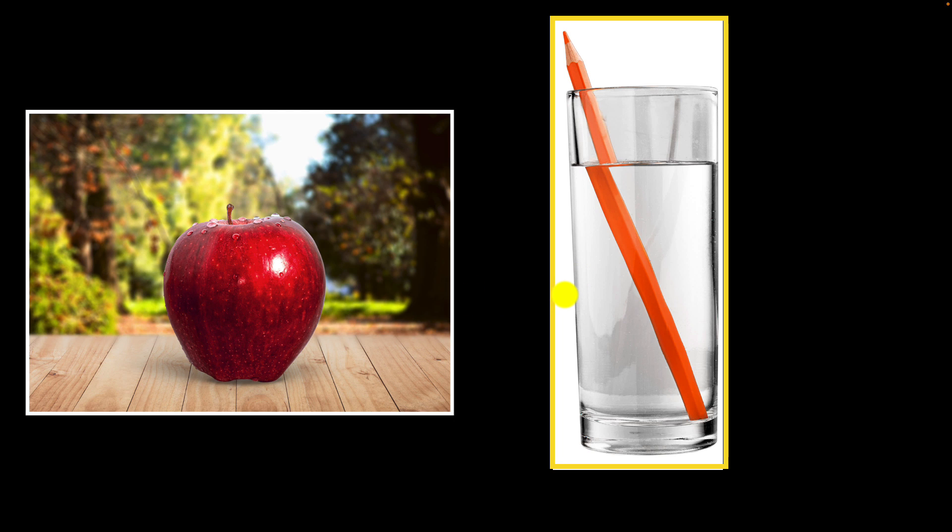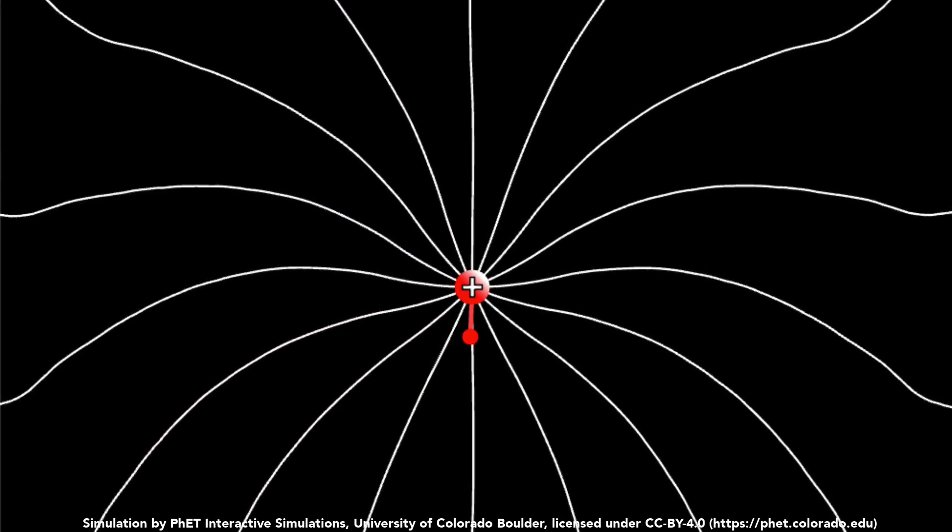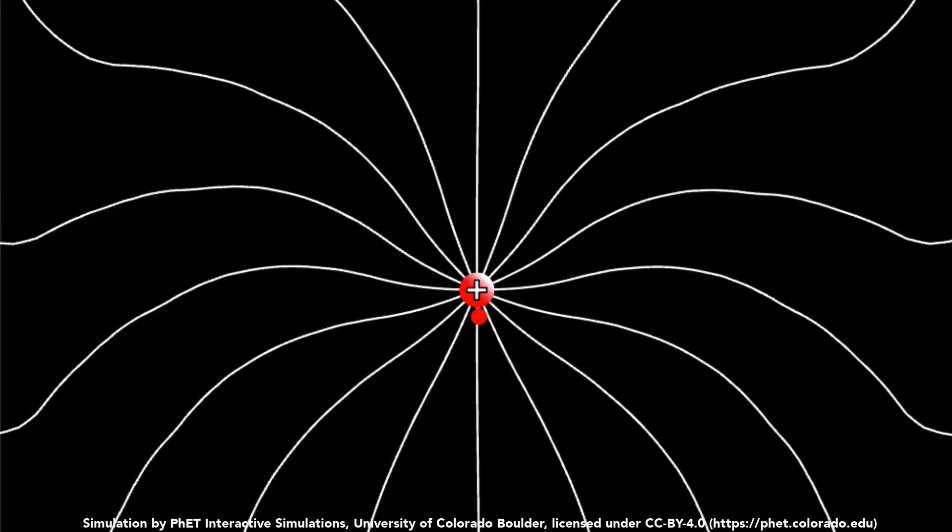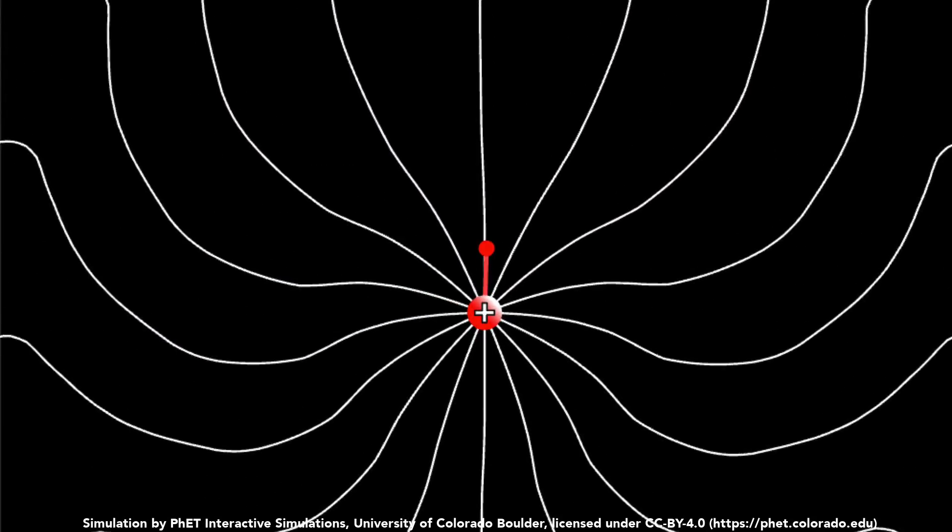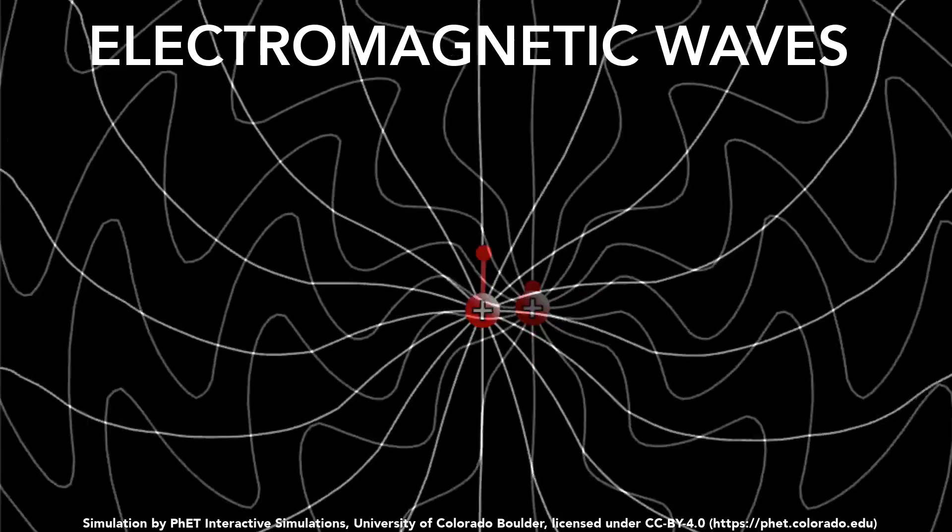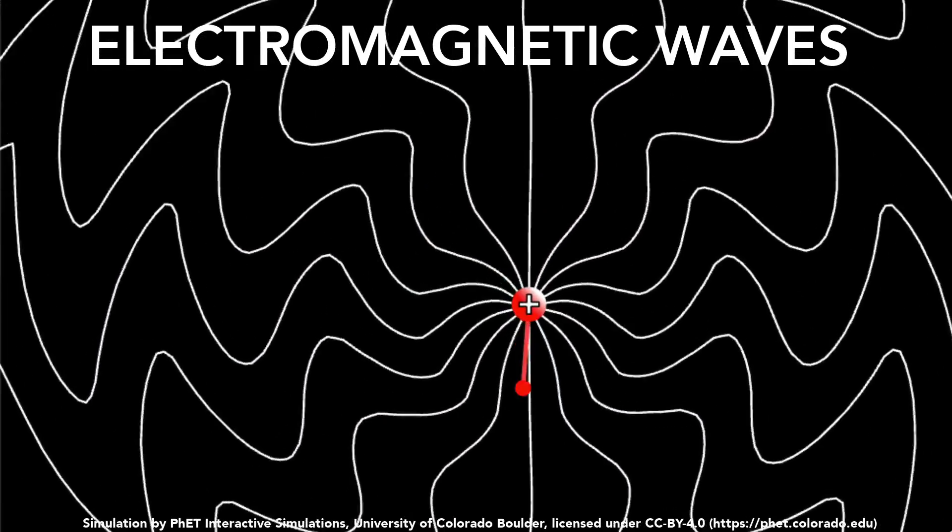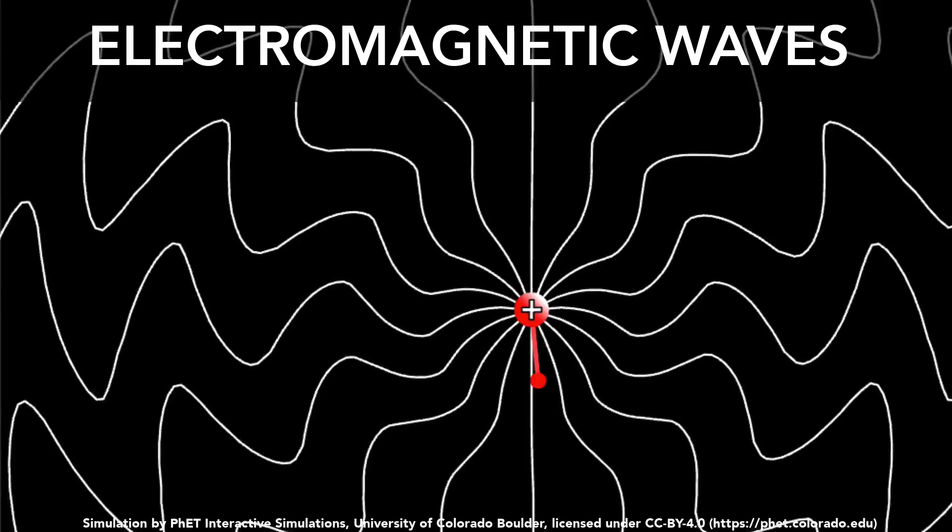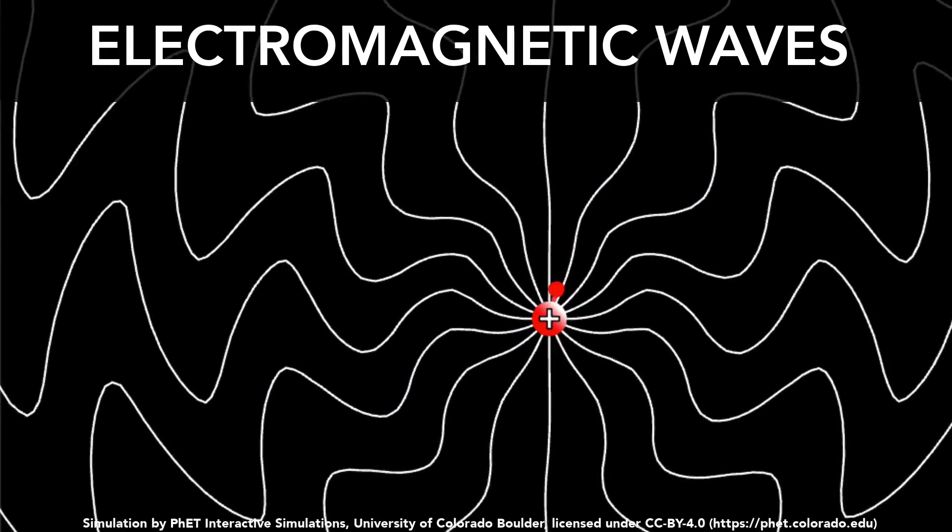So let's begin. We already understand the wave model of light. If you take a charge and you just start wiggling it, the disturbance propagates outwards through the electromagnetic field kind of like a ripple in a pond, and we call this the electromagnetic waves. And it has all the different properties of waves like wavelength, frequency, amplitude, and speed and so on. But for our purposes, let's concentrate on the direction of the light.